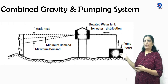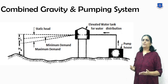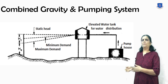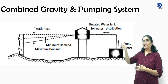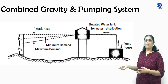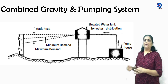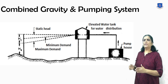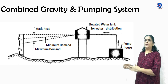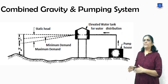Next, the combined gravity and pumping system. This system is the most common system. In this system, treated water is stored in an elevated distribution reservoir, then supplied to consumers by gravity. Excess water during low-demand periods gets stored in the reservoir and is supplied during high-demand periods. This system is economical, efficient, and reliable.